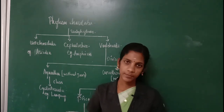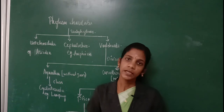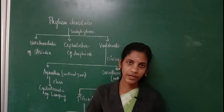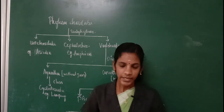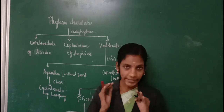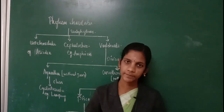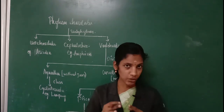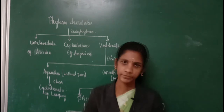But in the case of lower chordates, these gill slits will be present throughout their lifespan. Another identifying feature of Chordata is the presence of a ventral heart. If an organism has a ventral heart — that means if the position of the heart is on the ventral side — we can say that organism will come under the category of phylum Chordata.